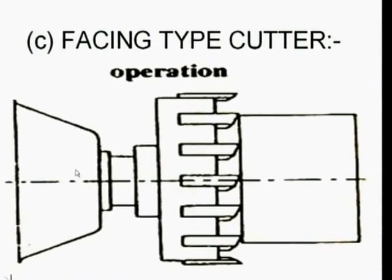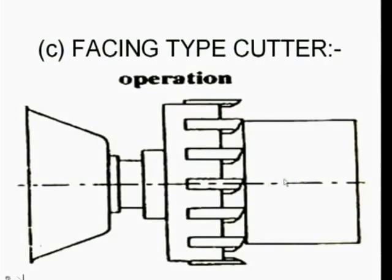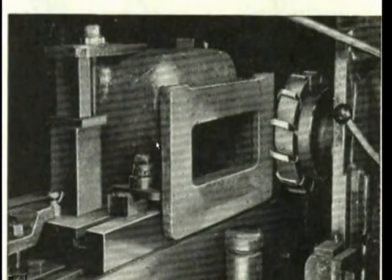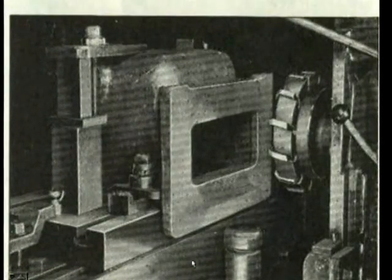The face type milling cutter is directly fixed to the stub arbor. A stub arbor is a short arbor which is not having its other end — something like a cantilever. This stub arbor holds the facing type cutter and it faces the surface. You can see the face milling cutter in action in this diagram, with the work piece being machined. This is a short stub arbor and this is how the work is fixed on the machine.